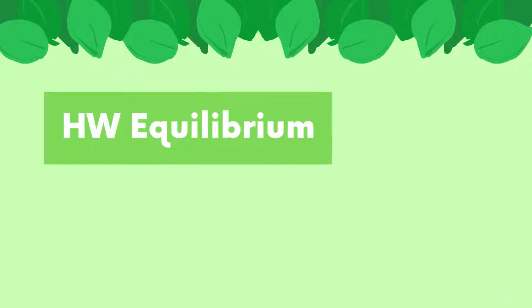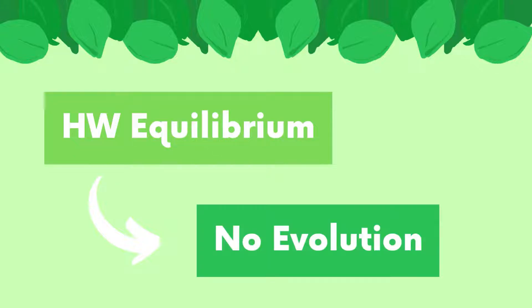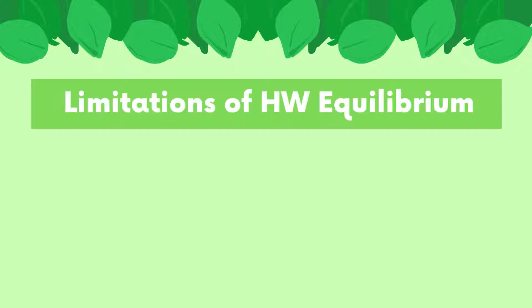Hardy-Weinberg Equilibrium is a mathematical model used to describe a population that's not evolving. Besides the five conditions that we discussed in our last video, there are certain limitations to Hardy-Weinberg Equilibrium, and in order for the Hardy-Weinberg model to be used, these conditions have to be met.